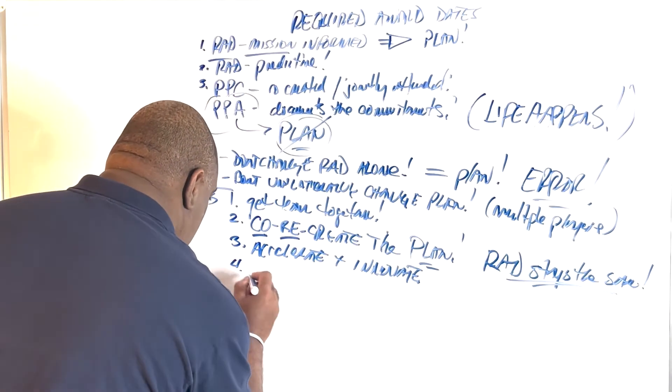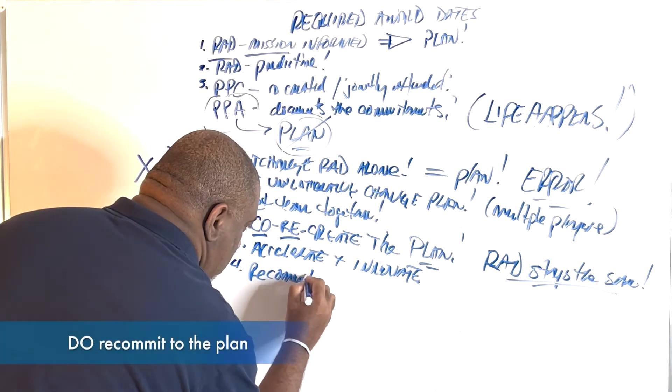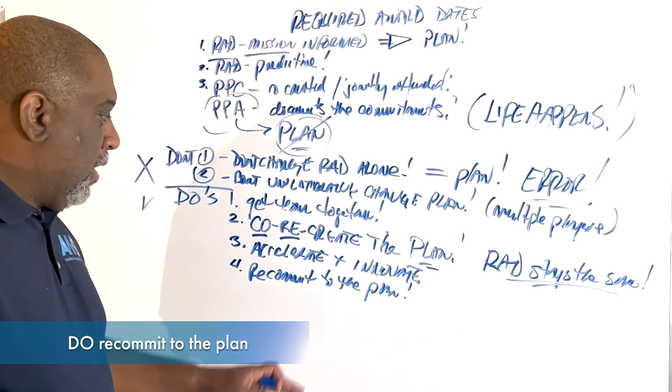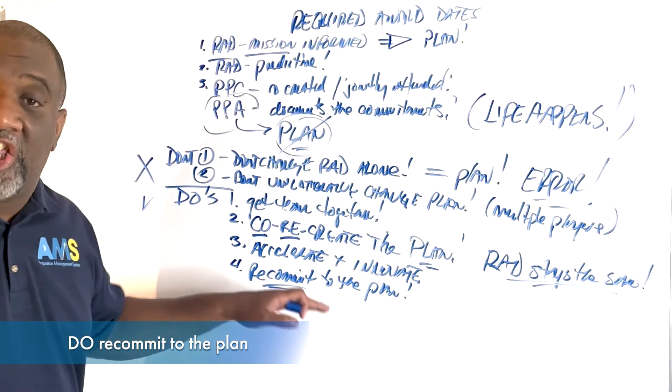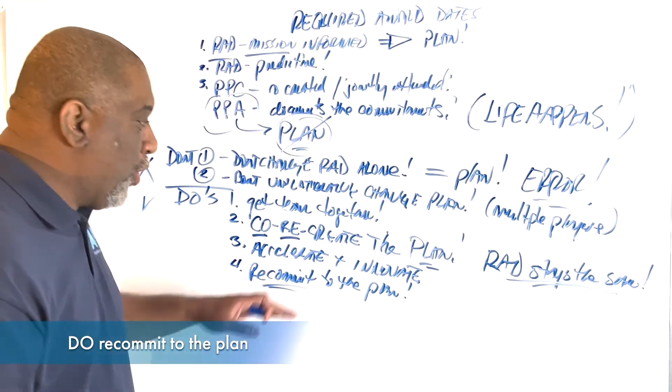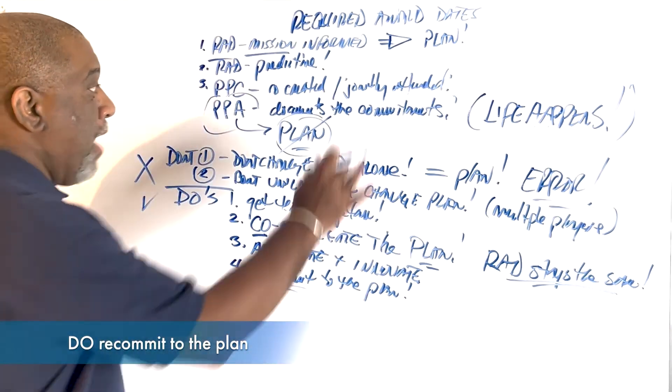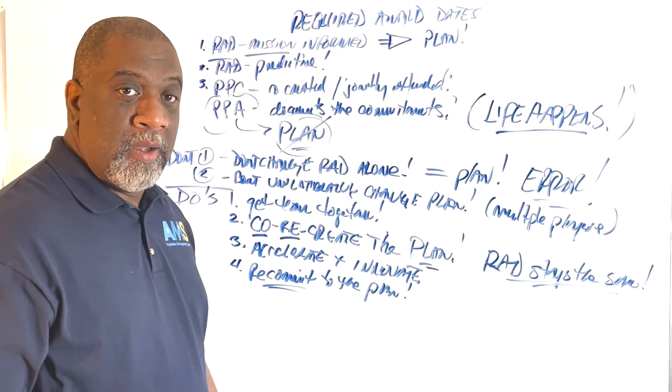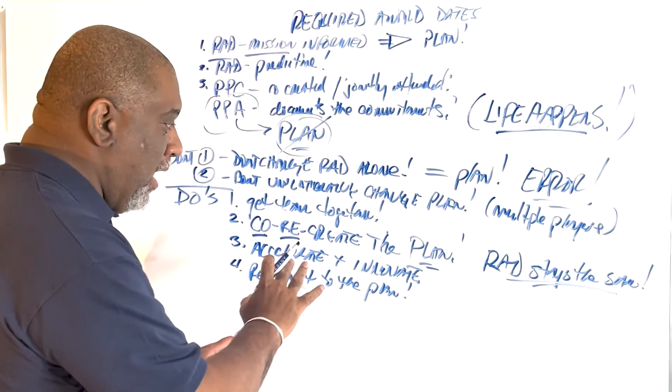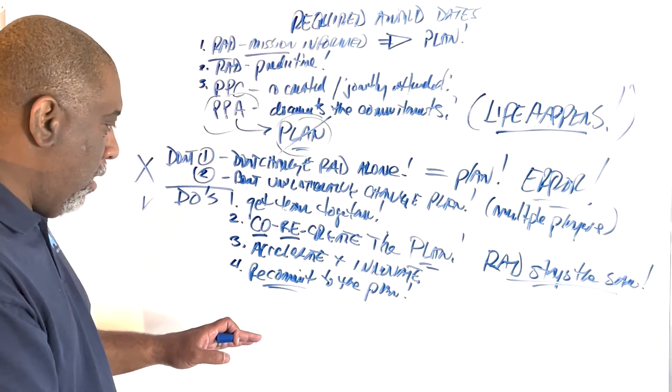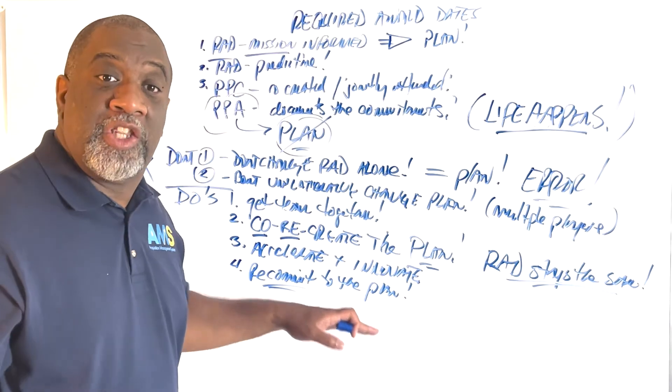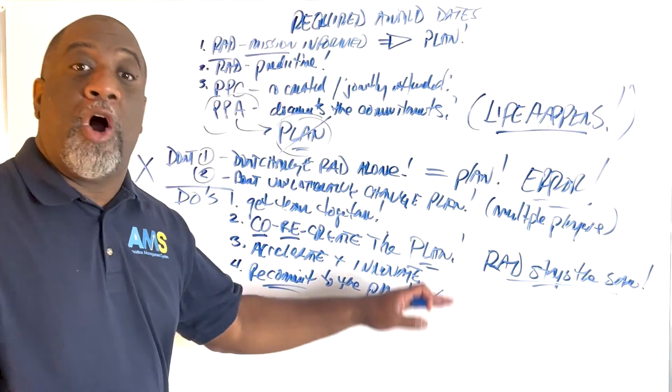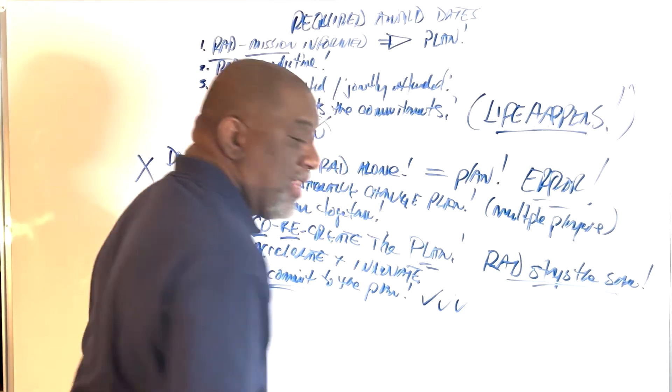Four, recommit. Recommit to the plan. You've got to get the commitments back to the new plan. Again, we've had commitments up here, but life happens. Now that we have accelerated, we've innovated, we now have to get recommitted to the plan. So that's very important, to lock down the commitments that people agreed to do what they say they were going to do.